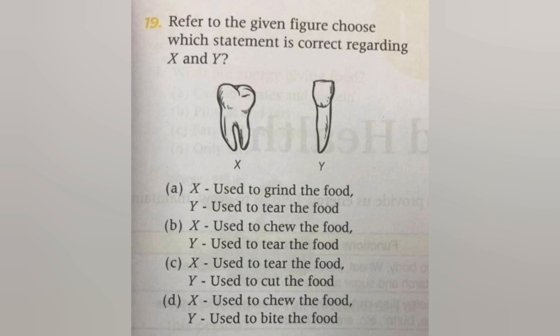Next, refer to the given picture. Choose which statement is correct regarding X and Y. A. X used to grind food, Y used to tear food. B. X used to chew food, Y used to tear food. C. X used to tear food, Y used to bite food. D. X used to chew food, Y used to bite food. The answer is D: X used to chew food, Y used to bite food.